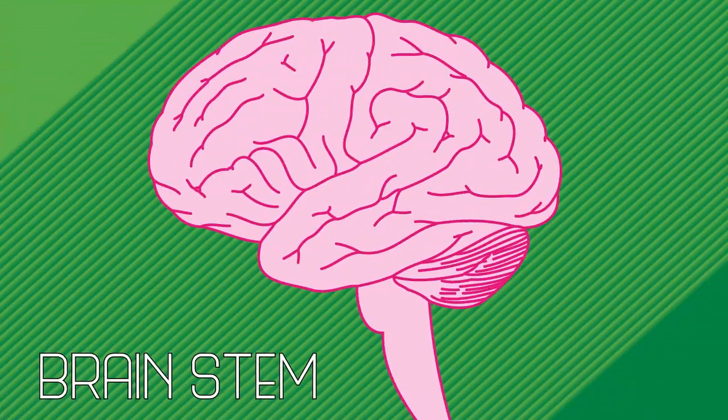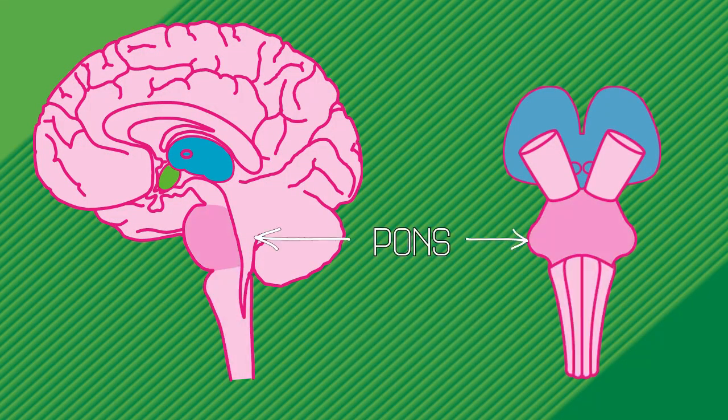Finally, the brain stem — the narrow structure underneath the cerebellum — is considered the most ancient brain structure; this is probably the first region of the brain that evolved in our earliest ancestors. It has three sub-regions: the medulla oblongata, the pons, and the midbrain. All information transmitted between your body and your brain has to pass through this region. It also regulates your heart rate, breathing, sleep, and eating — so you should love your brain stem. It keeps you alive.